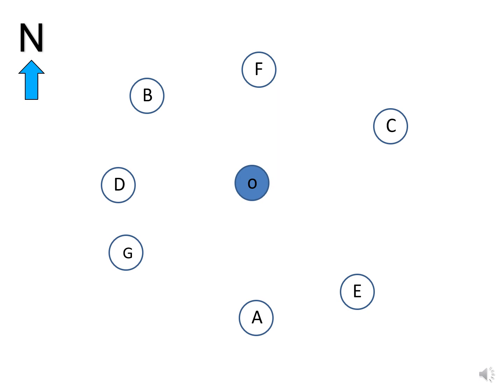The direction of A from O is south. B is towards the north-west of O. C is towards the north-east of O. D is towards the south-east of O. E is towards the south-east of O. F is towards the north-east of O. And G is towards the south-west of O. If you got all the directions correct, congratulations.